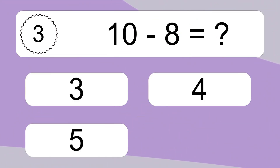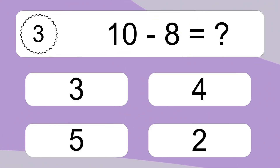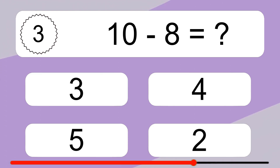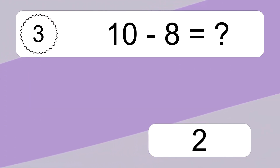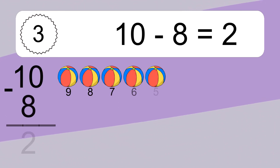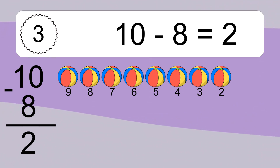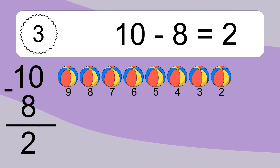10 minus 8 equals what? 10 minus 8 equals 2. Let's count it. 9, 8, 7, 6, 5, 4, 3, 2.